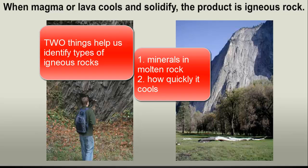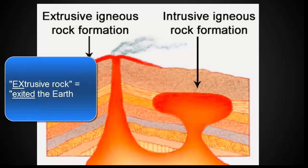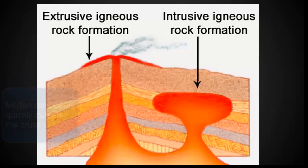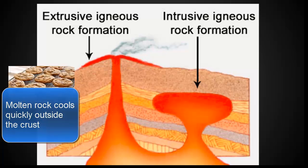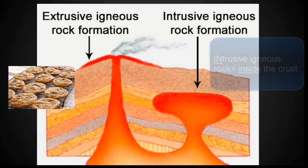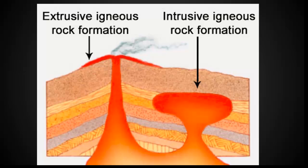When rock cools really quickly, that's called extrusive igneous rock. When magma comes up through the crust and exits out of a volcano, that lava starts to cool rather quickly — it'd be like taking cookies out of the oven; those cookies cool a lot faster when they're outside the oven. Intrusive igneous rocks are when the magma is in the earth's crust, getting further from its heat source but not quite outside the earth, so it slowly cools.